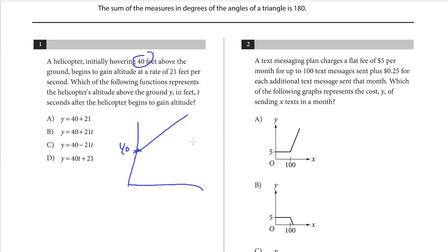And so sometimes they ask you to graph it. I think the next question is like that. But this one we just have to set up the equation. And so y is the altitude. The y-intercept is 40. And then the variable rate, the slope, is going to be 21 feet per second. So that's going to be 21T plus 40. And so the answer is B.